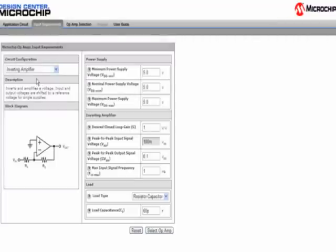Under Circuit Configuration, select Inverting Amplifier. We will keep all default values.